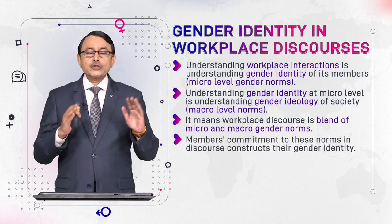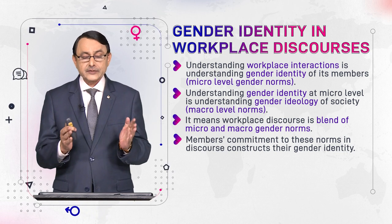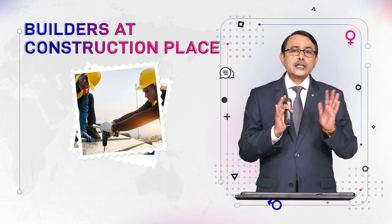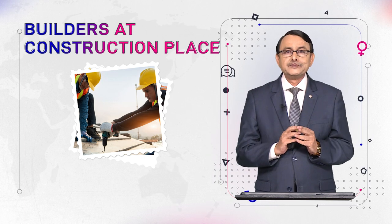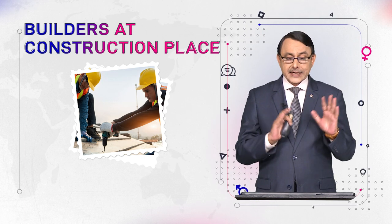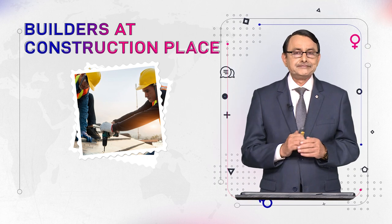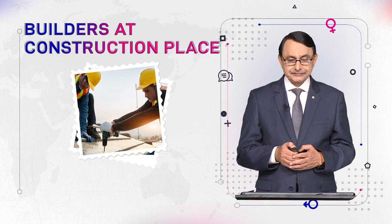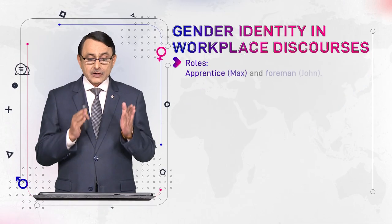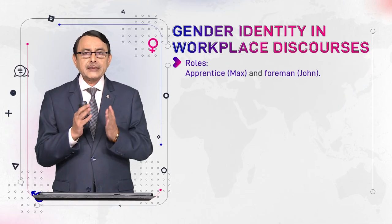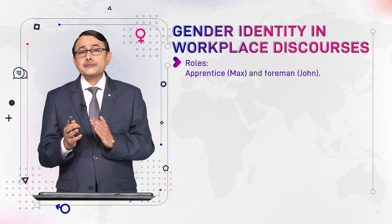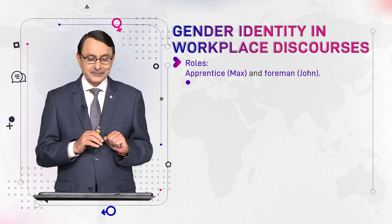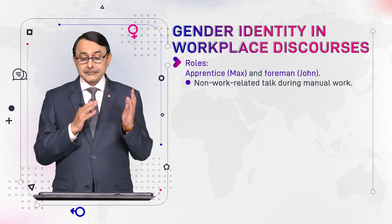Members' commitment to these norms in discourse constructs gender identity. Here is an example: the external context is that the people are builders working in a construction company. One of them, Max, is an apprentice — a new member — and the other, John, is a foreman. They have roles and responsibilities, and during manual work they also engage in non-work related talk.